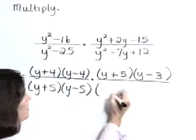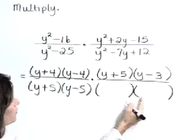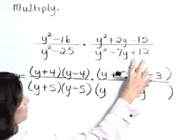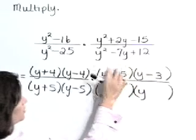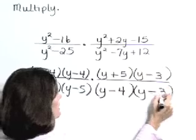Down to the denominator, it factors as the product of binomials as well. Leading factors are both y. Factors of positive 12 that sum to negative 7 are minus 4 and minus 3.